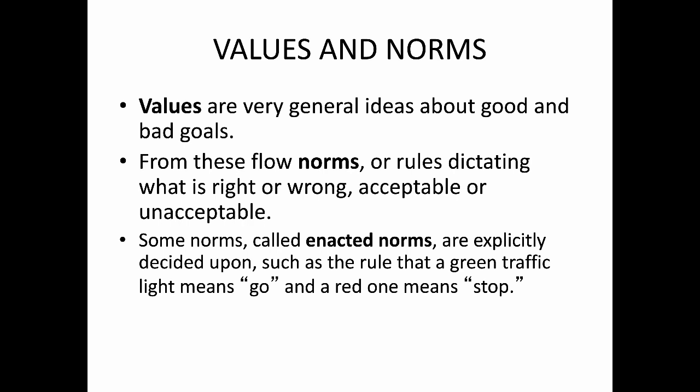Let's talk a little bit now about values and norms. A value is a very general idea about good and bad goals or objectives. Every culture has values — many cultures share values like freedom, for example — but some cultures are going to prioritize some goals over others. From values flow what we call norms: a norm is a specific rule that dictates something that is right or wrong. Sometimes they're quite subtle, sometimes they're literally written down. If I want to know how much it's appropriate to tip in a restaurant in a certain country, nowadays I can just Google that.